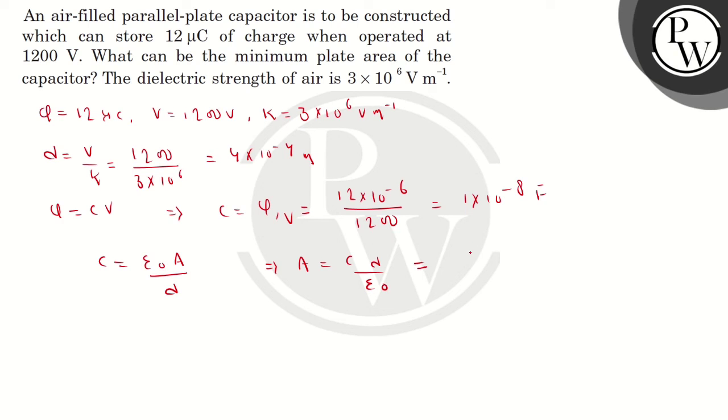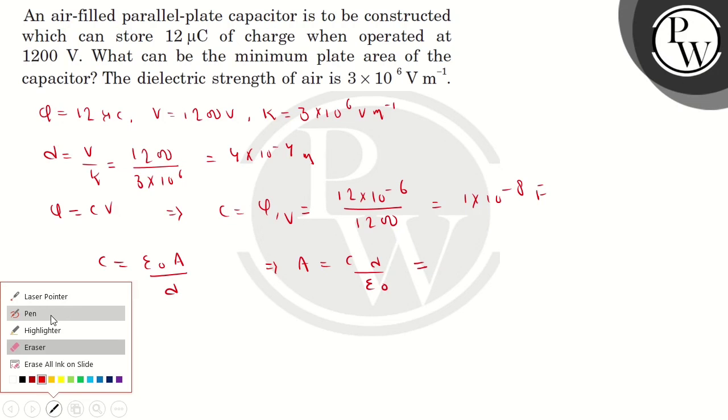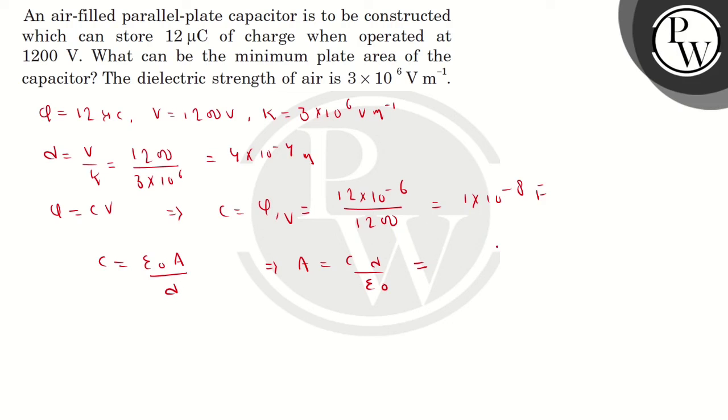Putting the values, C is equal to 1 × 10^-8 Farad, D is 4 × 10^-4, divided by epsilon_0, which is 8.8 × 10^-12.